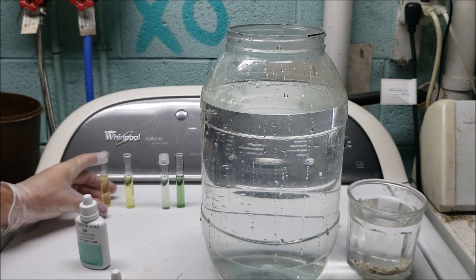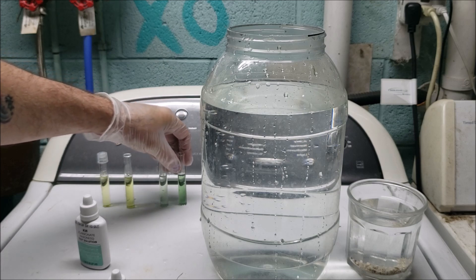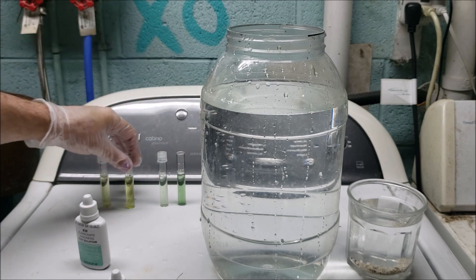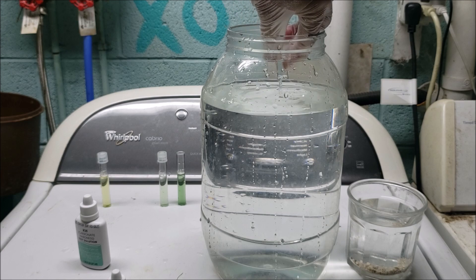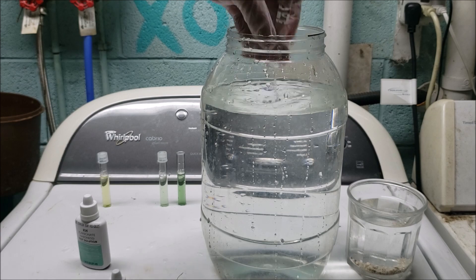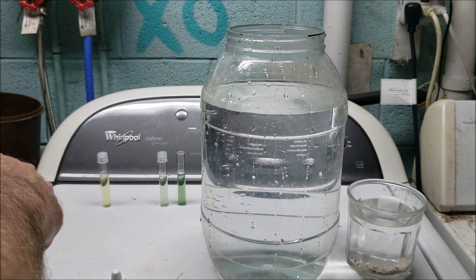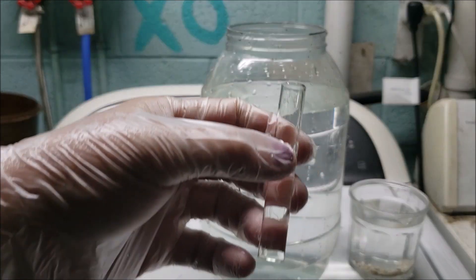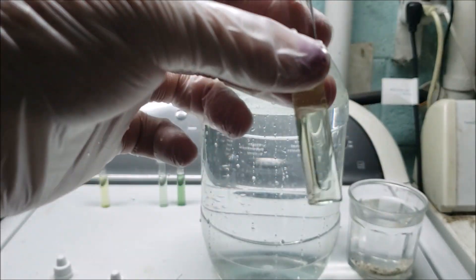And you just saw me increase the TDS by 80 parts per million and we went from two degrees general hardness to seven degrees general hardness. And since I did not add any carbonates we'll test the carbonate hardness again and if I can not knock stuff over on myself while I'm doing this we should see the same result, no carbonate hardness or whatever that first drop is going to turn it yellow. First drop turned it yellow.